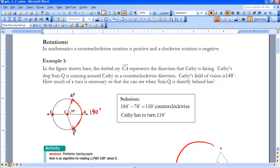So the question is, how far does Cathy need to rotate her head in order to see her dog, Susie Q, given that she has a field of vision of 140 degrees?